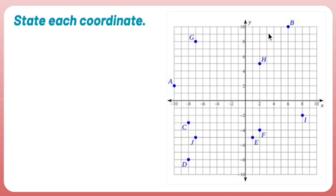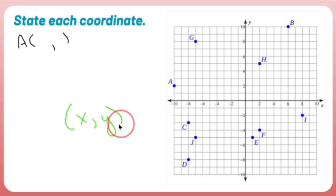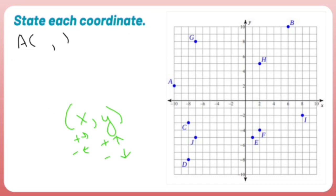State each coordinate. We know that a point is given as an x and a y. Positive x means you've gone right, negative x means left. Positive y means up, negative y means down. So A was left 10, up 2 — that's negative 10, positive 2. B is right 6, up 10 — that's positive 6, positive 10.